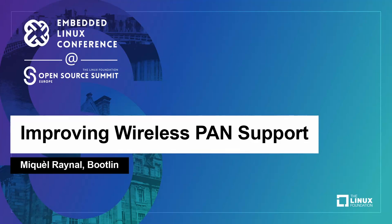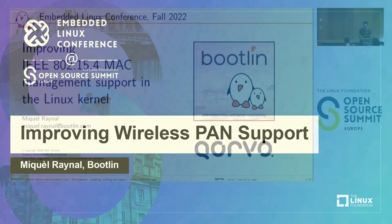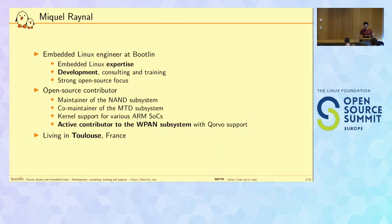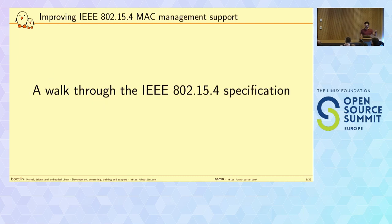Thanks everyone for attending. This session is going to be about the IEEE 802.15.4 layer in the Linux kernel. I'm Mikkel. I recently got involved in the WPAN subsystem on a project with Corvo, trying to bring more support for the MAC management commands in the Linux kernel. I'm going to start this presentation with a walkthrough of the specification, just to give a little bit of context about what I'm trying to achieve and how.